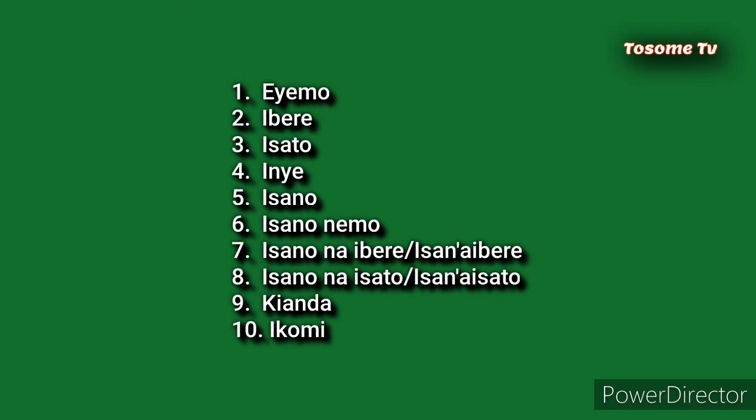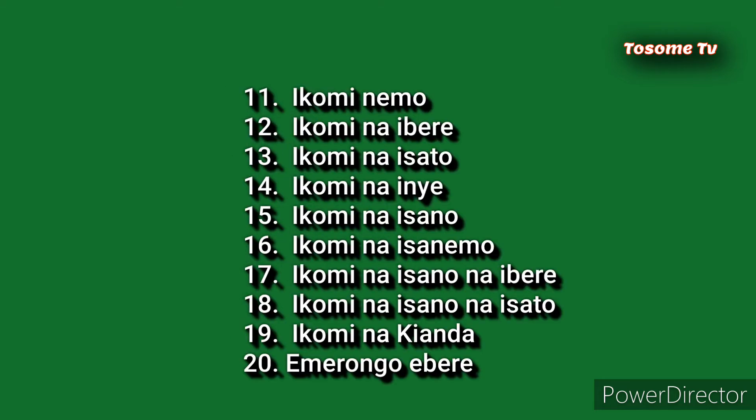Now when you know how to count one to ten, then it is very much easier to count the rest beyond ten, because you will be saying IKOMI NEYEMO — that's eleven. IKOMI NEYEMO. IKOMI NAIVERE — that is twelve. IKOMI NAISATO — that is thirteen. Fourteen, you will say IKOMI NAINYE.